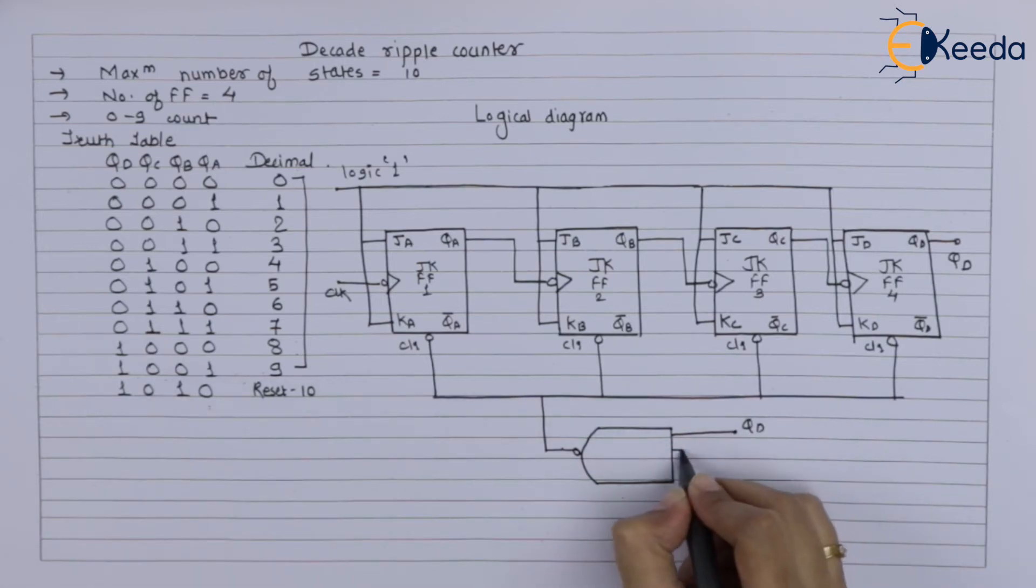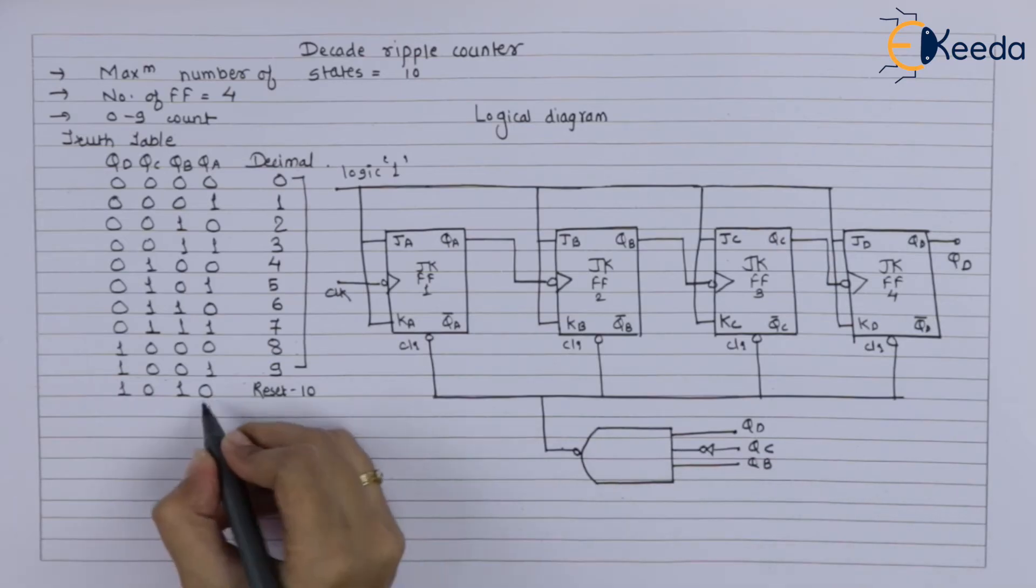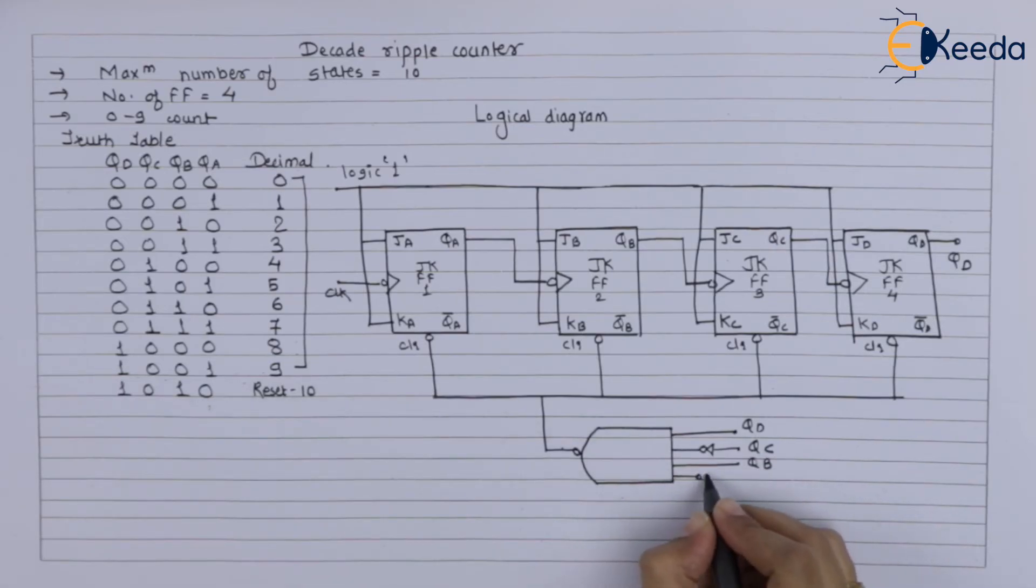Now you have to give QD, then QC bar. Means use NOT gate. After that QB, and QA bar. Means again apply NOT gate and write down QA.